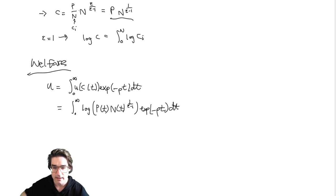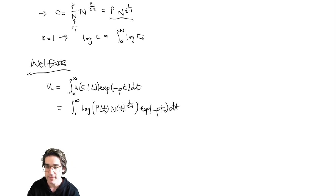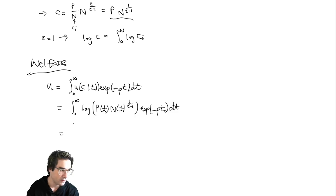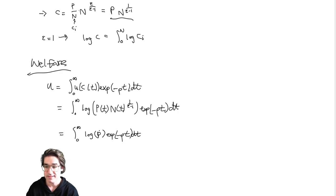Now we can split that up. We know P is going to be constant just from the get-go — that's what we found in equilibrium. And N is going to be growing at constant rate G. We can split the logarithm because integrals are linear. We split the whole thing into two different integrals: the log of P integral is your level term — the baseline level from production in this logarithmic setting. And then there's the growth-related term involving log of N(t) to the one over epsilon minus one, which we can factor out to get one over epsilon minus one times the integral of log N(t).